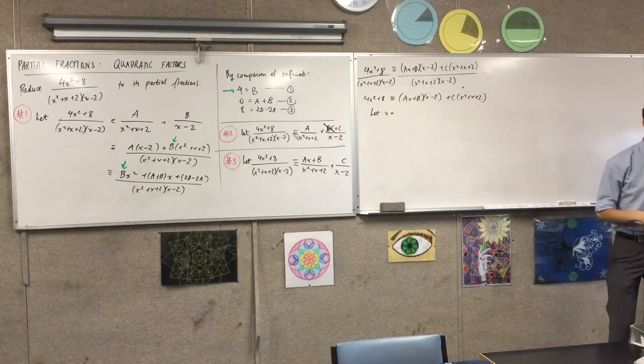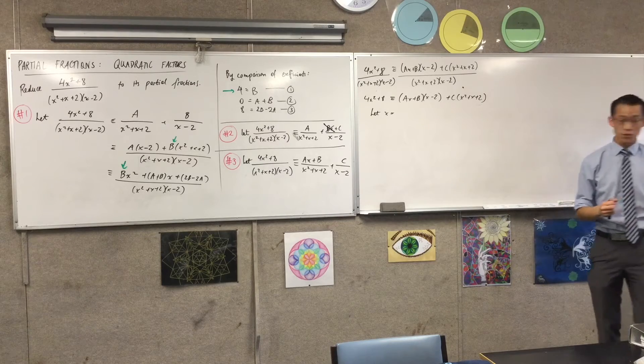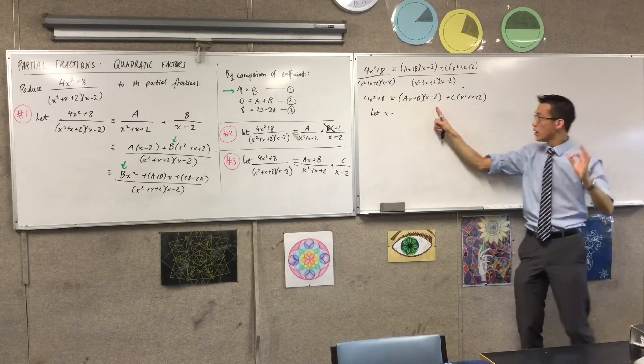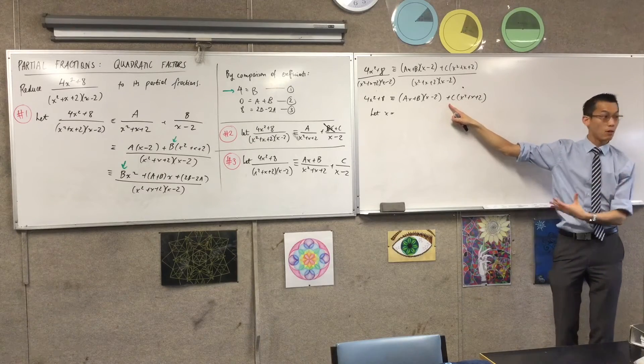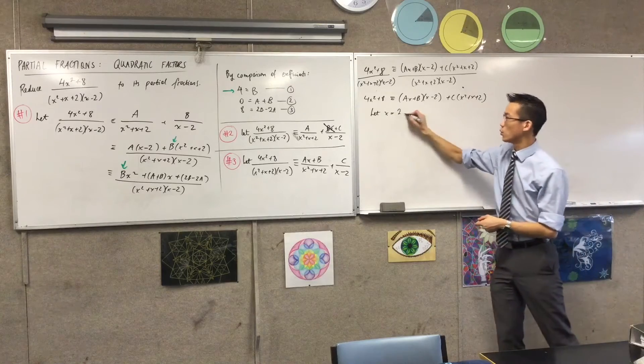If I choose 2, that will make this whole term become 0. This won't become 0, so it will leave behind c, so I can solve for c. Does that make sense? So I'm going to let x equal 2.